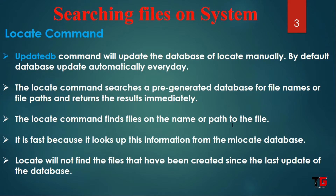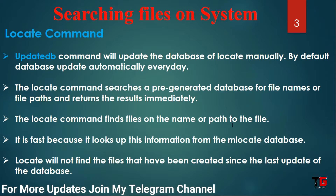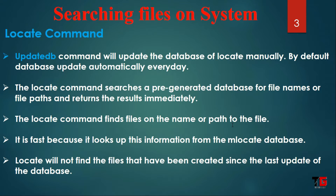First is the locate command. First you have to update the DB command to update the local database manually. By default the database is automatically updated every day, but the time is not fixed — it could be after 12 hours or 30 minutes. The locate command searches a pre-generated database for file names or file paths and gives the result immediately. It is fast because it looks up information within the MLocate database.